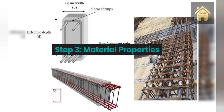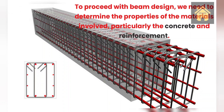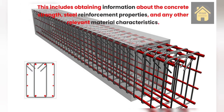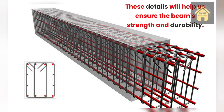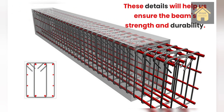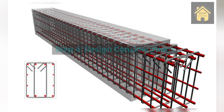Step 3 — Material properties. To proceed with beam design, we need to determine the properties of the materials involved, particularly the concrete and reinforcement. This includes obtaining information about the concrete strength, steel reinforcement properties, and any other relevant material characteristics. These details will help ensure the beam's strength and durability.